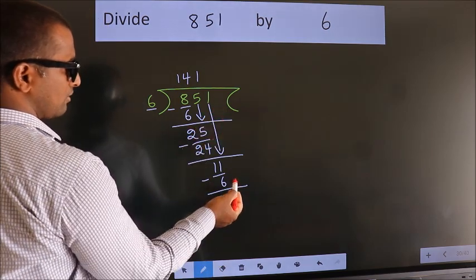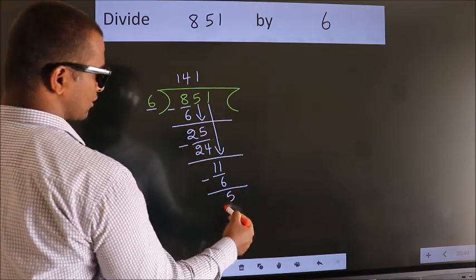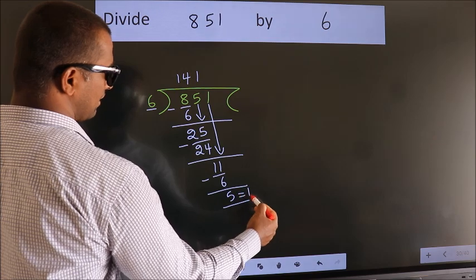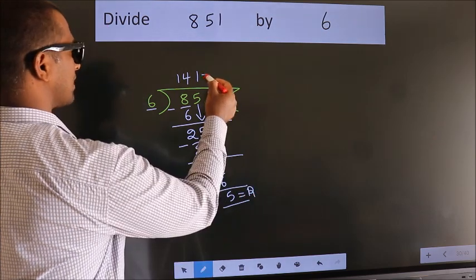No more numbers to bring it down. So we stop here. This is our remainder. This is our quotient.